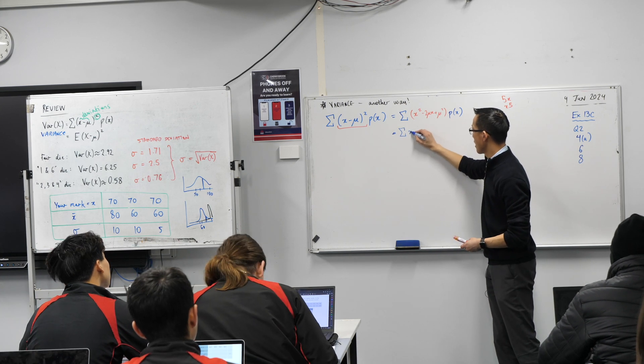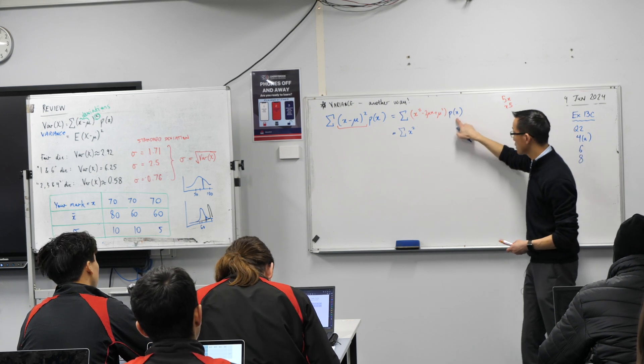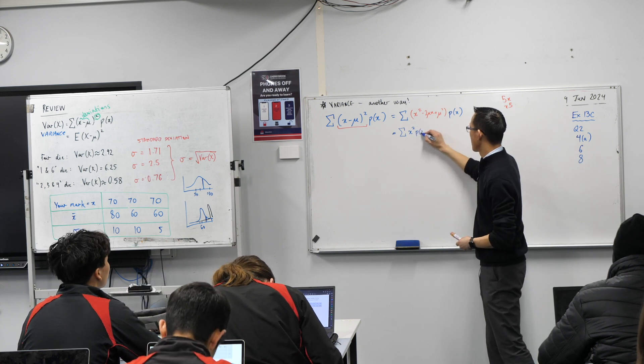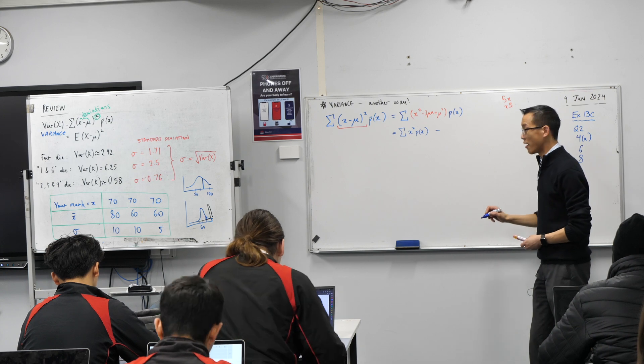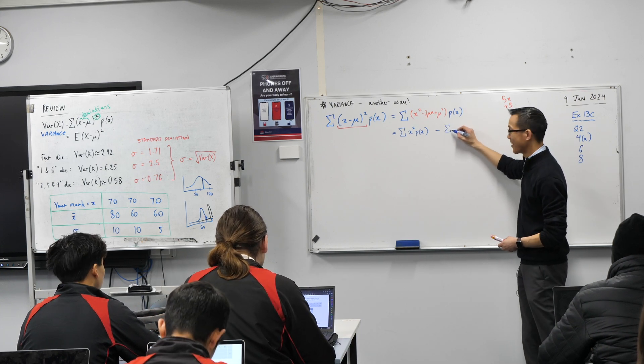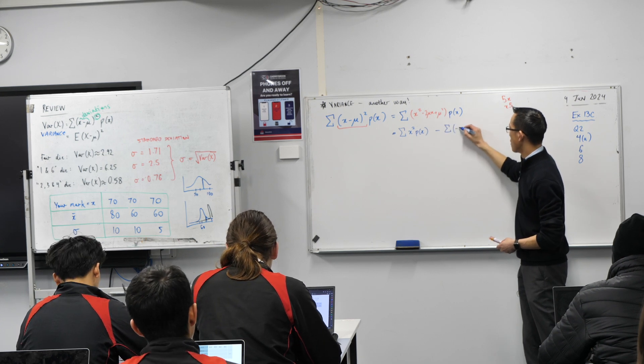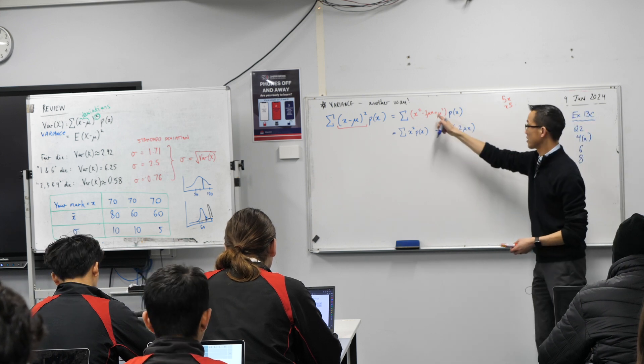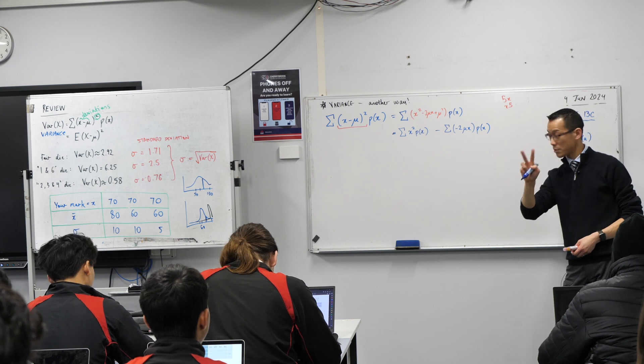Here comes pile number two. It's still a pile, right? And then it's this minus two mu x. Minus two mu x. And then, again, because everything's in the brackets, I multiply by the probability. Okay, there's pile number two.